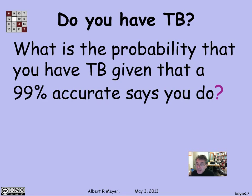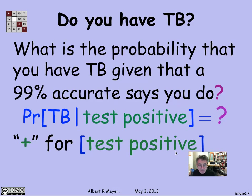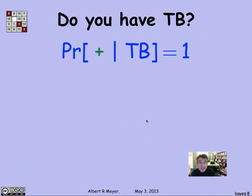In other words, I want the conditional probability that I have TB given that the test comes in positive — the test says you have TB. "Test positive" is a big phrase I won't have room for on other slides, so let's abbreviate it by plus. Plus means the test said positive — you have TB. That's the conditional probability we're trying to calculate.